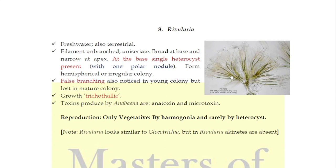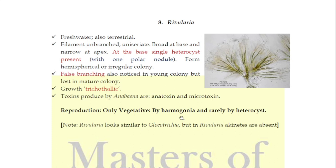A special feature of Rivularia is that when young colonies are forming, false branching is also noticed. Regarding reproduction: hormogonia are formed, and rarely heterocysts get involved in reproduction.